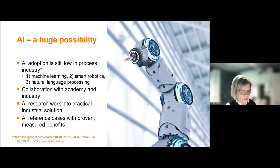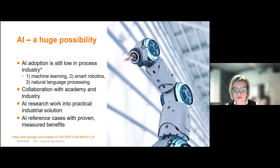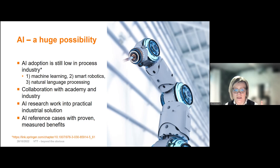When we think about AI in process industry, for me it is still a huge possibility — it hasn't really come true yet. According to one study conducted last year in the Spire environment, there is a low adoption of AI in process industry — it is below 30%. The most promising technologies that companies see are machine learning, smart robotics, and natural language processing. I think we can really adopt AI better for our industry. There are three ways to do it: we need collaboration between academia and industry to build the bridge over the existing gap; we need to bring AI research work into practical industrial solutions; and we need AI reference cases with proven, measured benefits, because we are still lacking these.